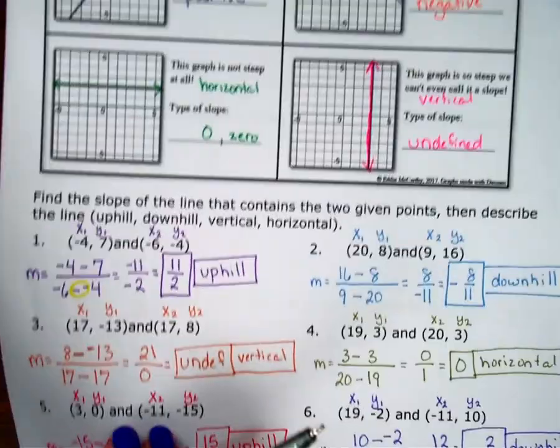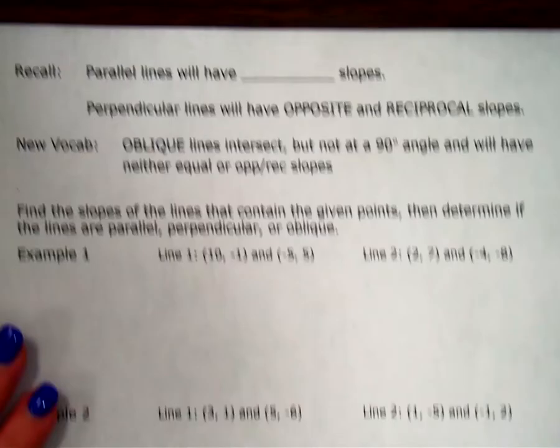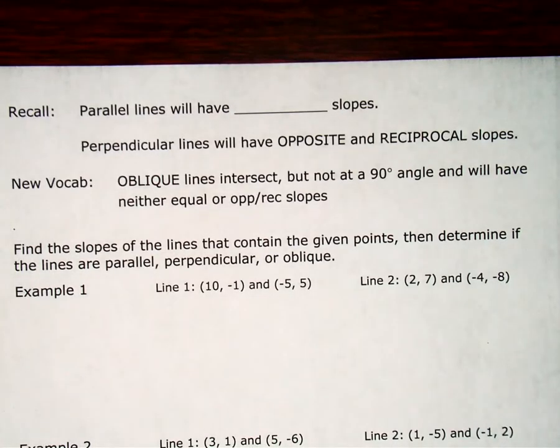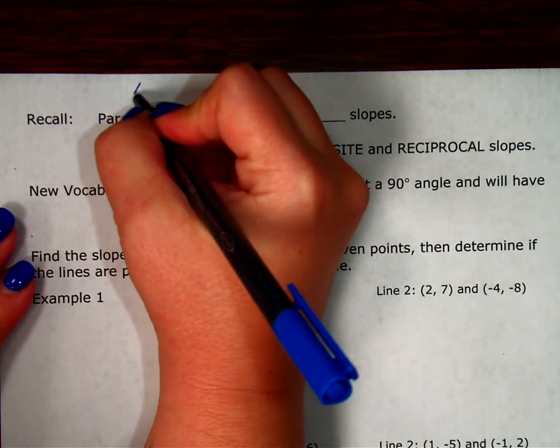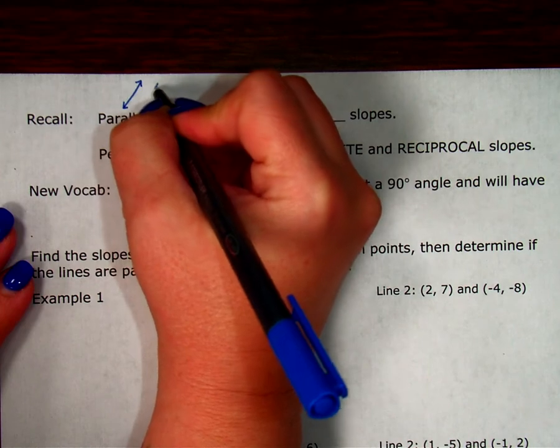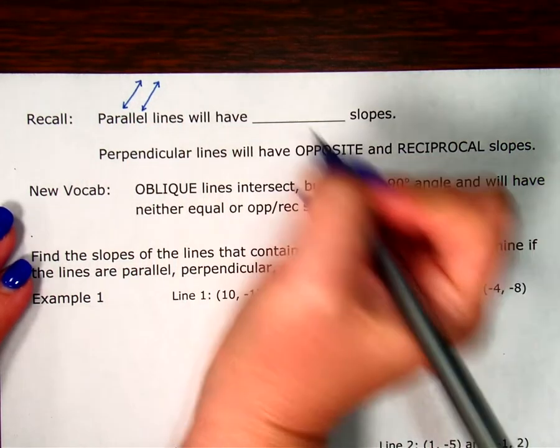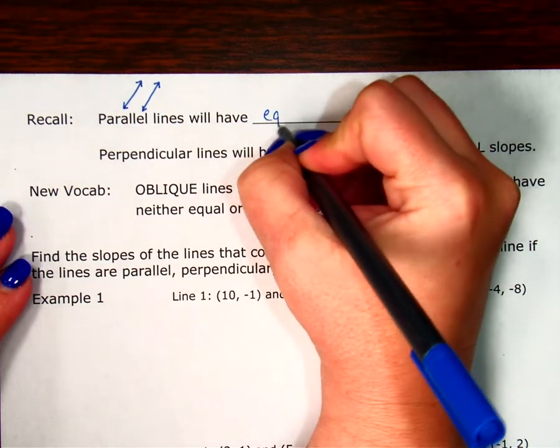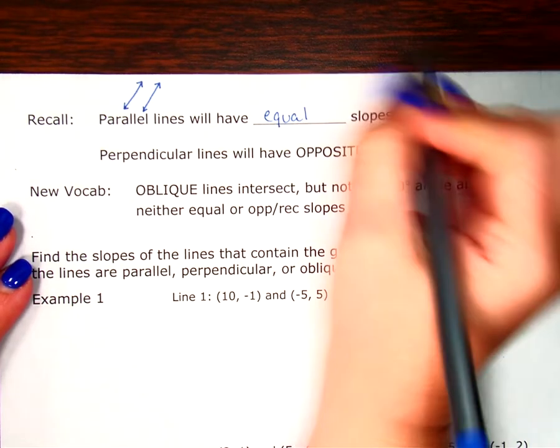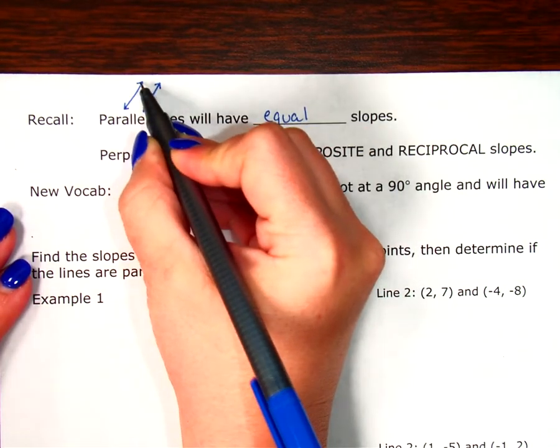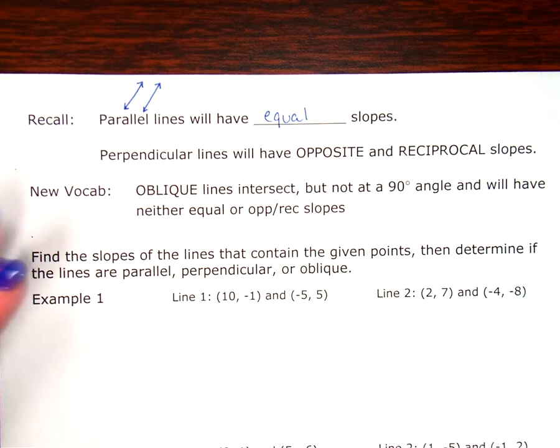So what we're going to do today is compare two slopes and see how they relate to each other. If you have two lines and they're parallel, think about what parallel lines are. They go in the same direction. They never are going to intersect each other. Parallel lines will have equal slopes because they're going to rise and run at the same rate.